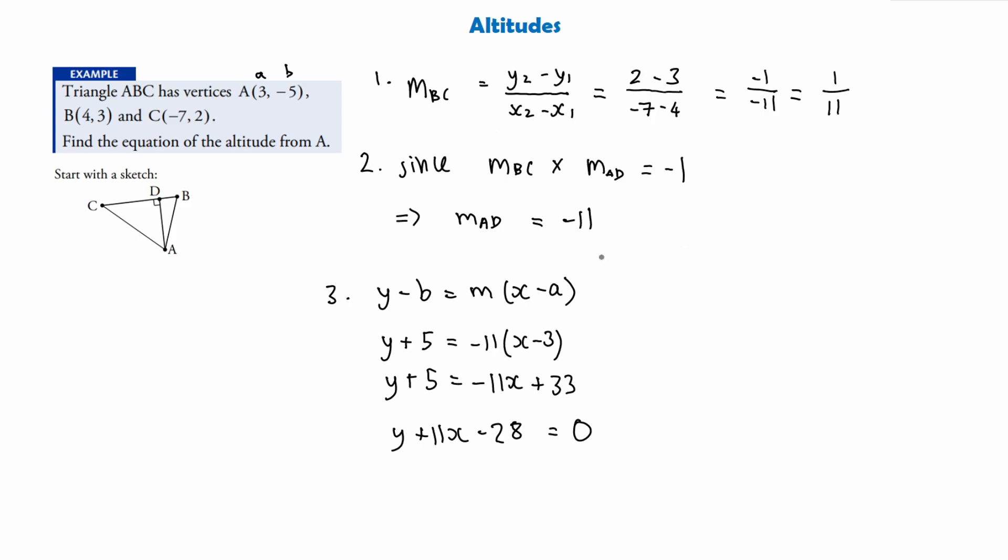So again, these are the three steps we need to do when working out an altitude is first work out the gradient of the perpendicular line to the altitude. In this case, BC for us. The second step is therefore we can use this gradient to work out the gradient of the altitude. And in step three, put the gradient of the altitude and a point of the altitude into this equation here to give us the equation of the altitude.